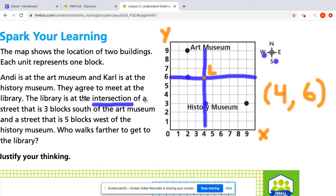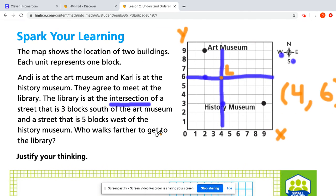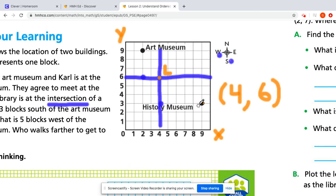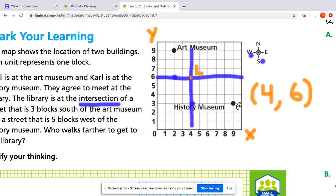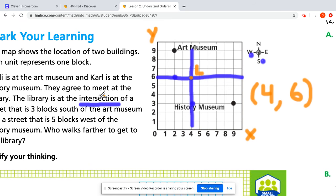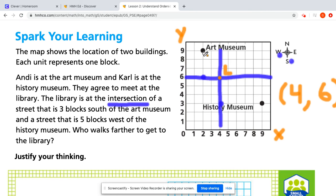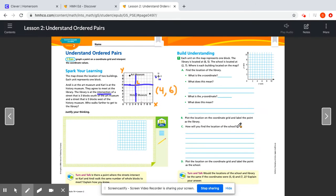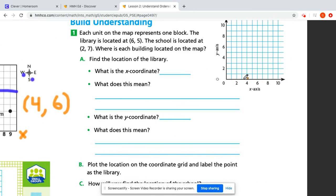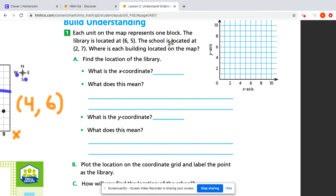And then it is your job to answer the question of who walks farther to get to the library. So Carl, who's at the museum, does he walk farther to get to the library, or is it Andy? Let's go over to here. Each unit on the map represents one block, very similar to the other situation.